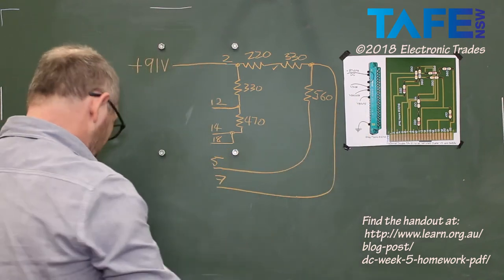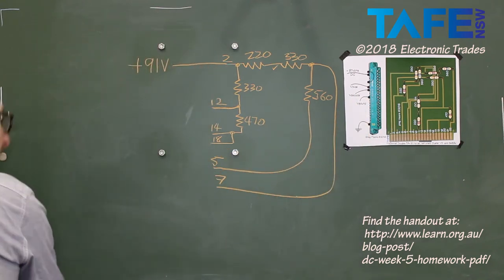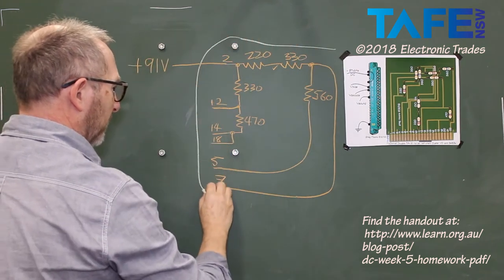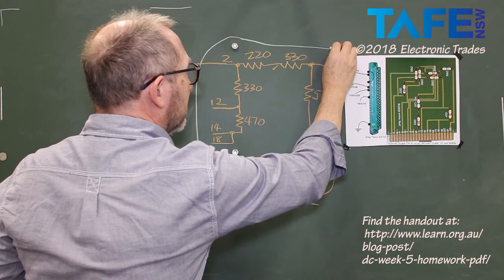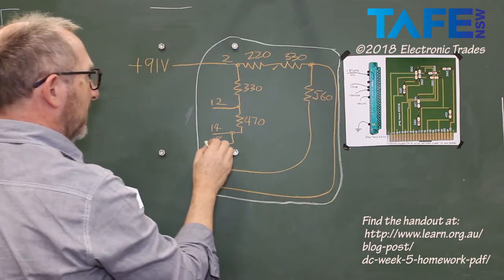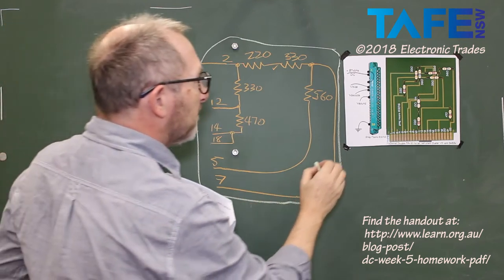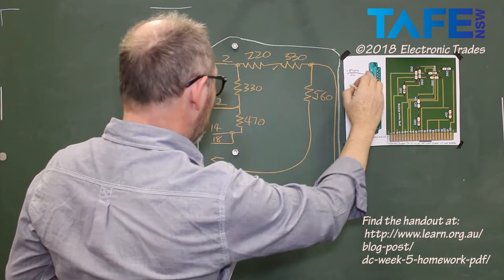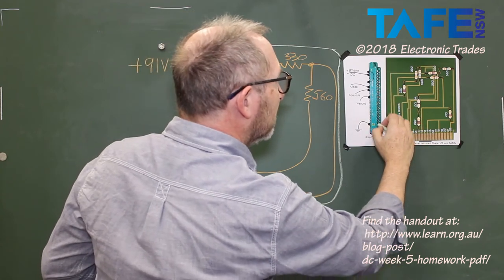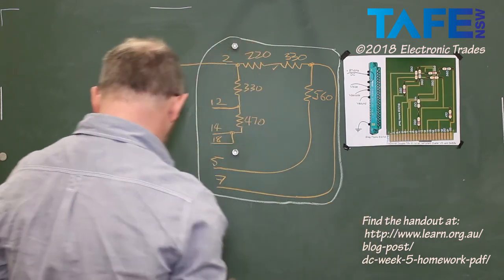So maybe what I'll do at this point in the drawing, I might put a nice big loop around this to show that that's just my first part of the drawing. And then pin 2, pin 1, where's pin 1? Pin 1 is connected to...